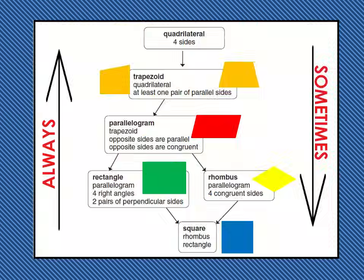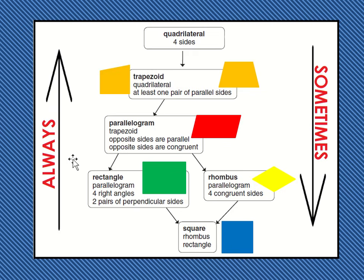So remember, these are all quadrilaterals, which means they all have four sides. Now when we're reading this chart, remember when we go down, sometimes the thing above it is the thing below it. But when we go up, it is always the shapes above it.